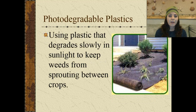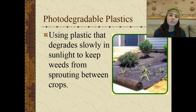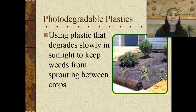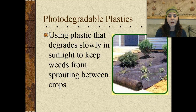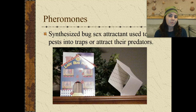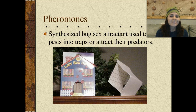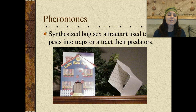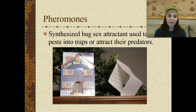We have photodegradable plastics — plastic that degrades very slowly in sunlight to keep weeds from sprouting between crops. We can also employ the use of pheromones. We can actually synthesize a bug sex attractant, which is used to lure pests into traps or to attract their predators.